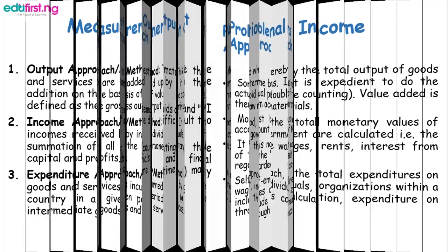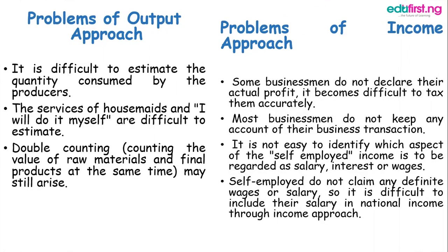Problems of the output approach of national income: it is difficult to estimate the quantity consumed by the producer. The services of housemaids and do-it-yourself activities are difficult to estimate. Double counting is also a problem, as the value of raw materials and final produced products may be counted at the same time.